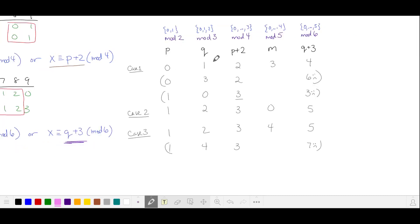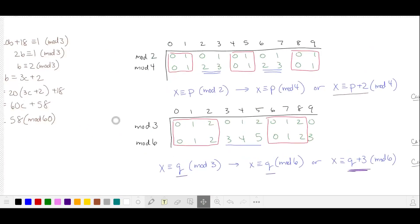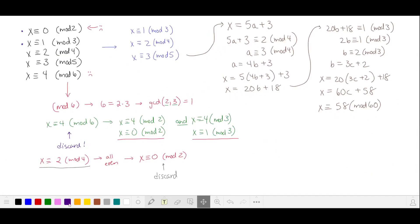Case one is zero mod two, one mod three, two mod four, three mod five, and four mod six. This was actually the system of equivalences that we solved in our example. So our answer to case one is 58 mod 60.